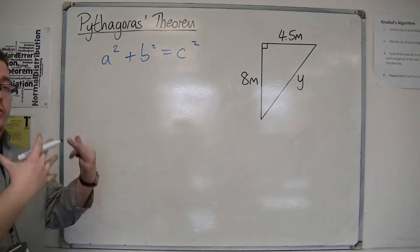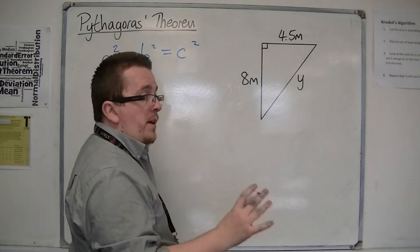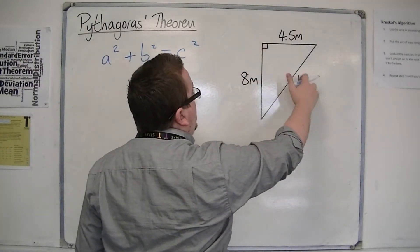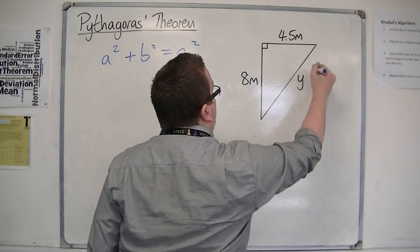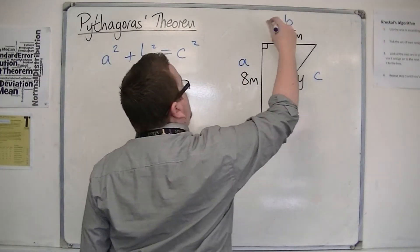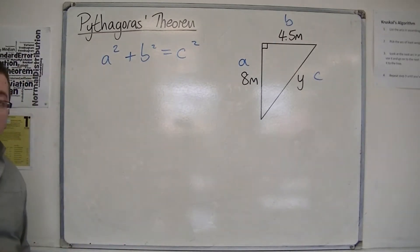You need to label the triangle. Remember that c is the one opposite the right angle—it's the hypotenuse. The a and b are the other two sides, and it doesn't matter which way around you label them.